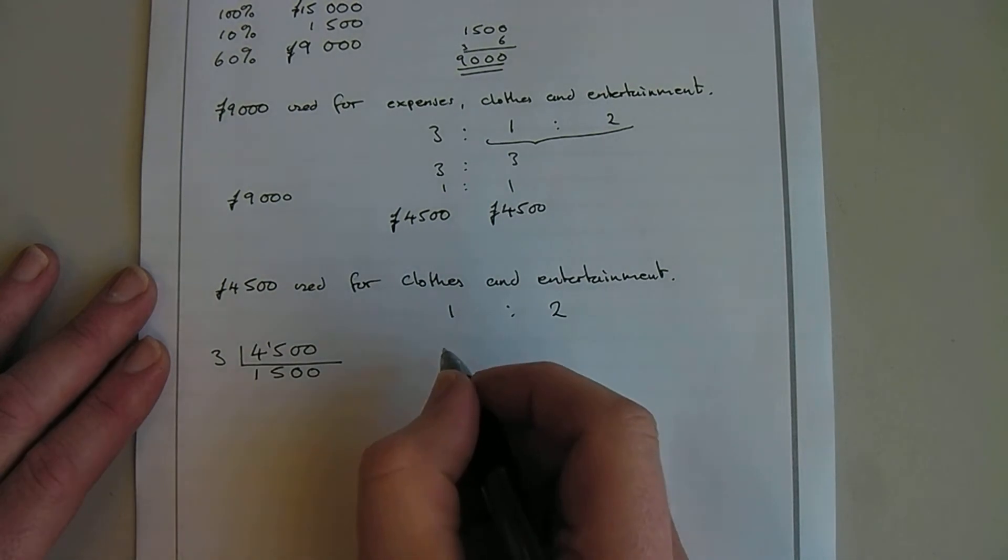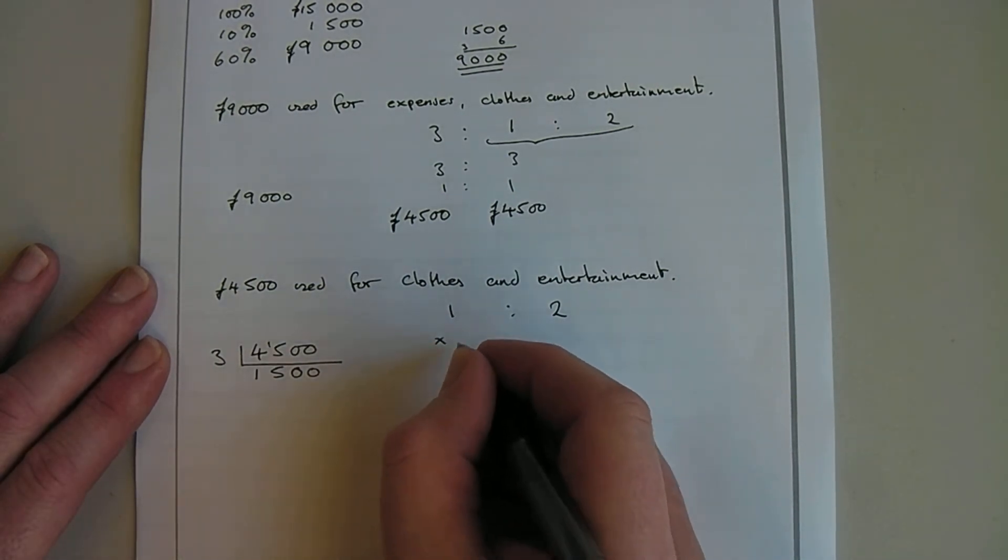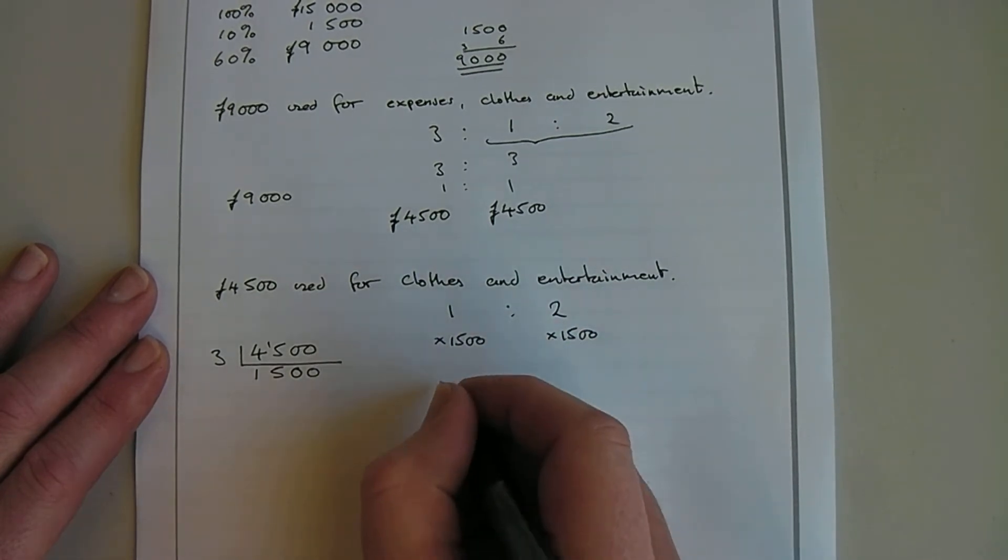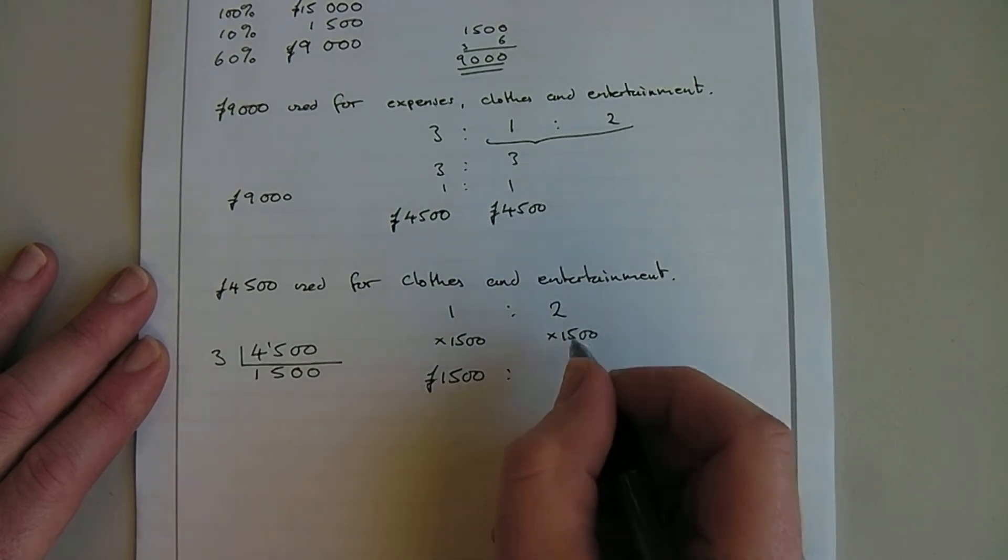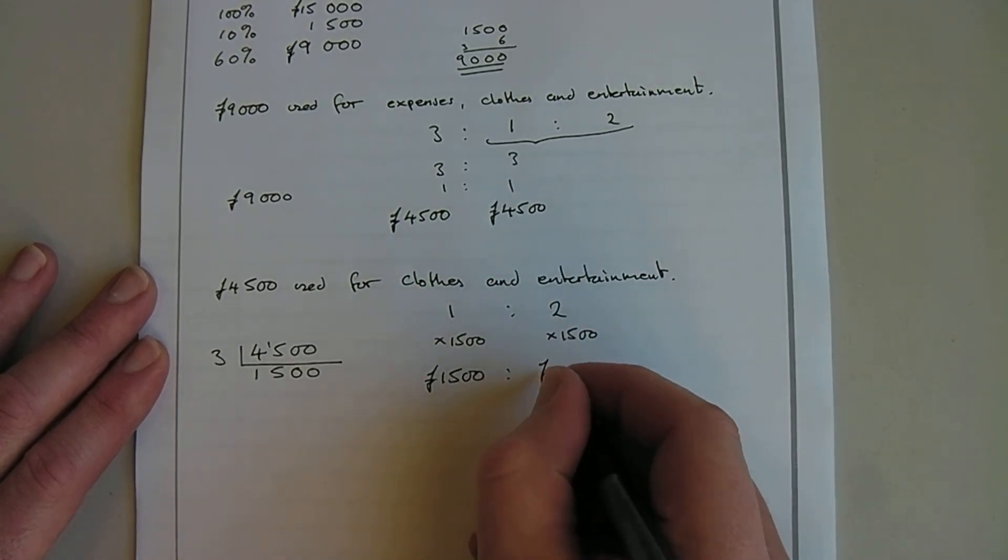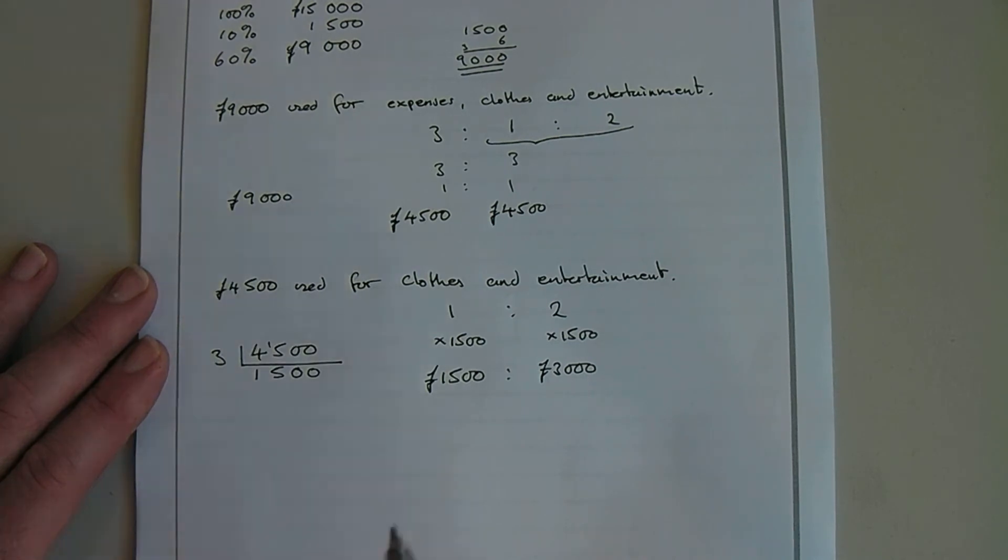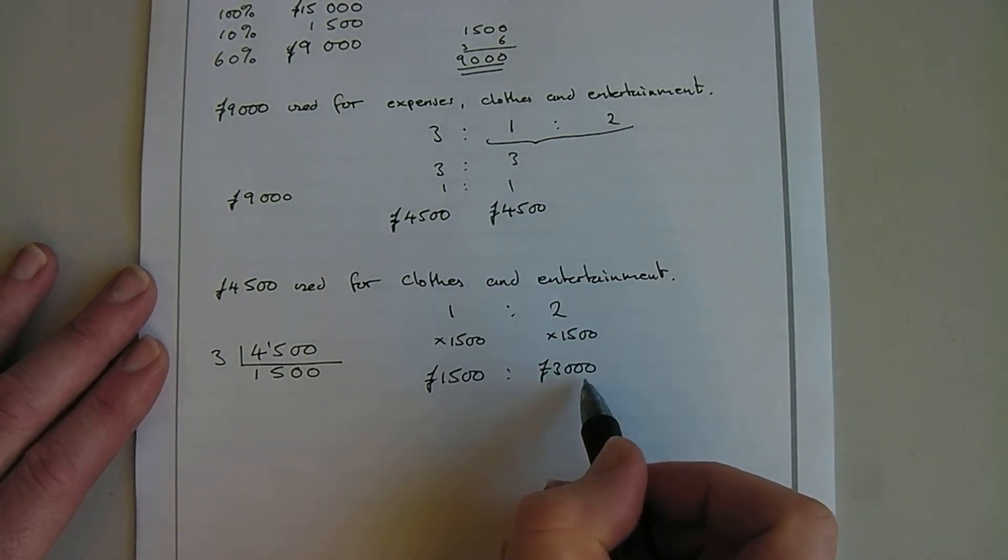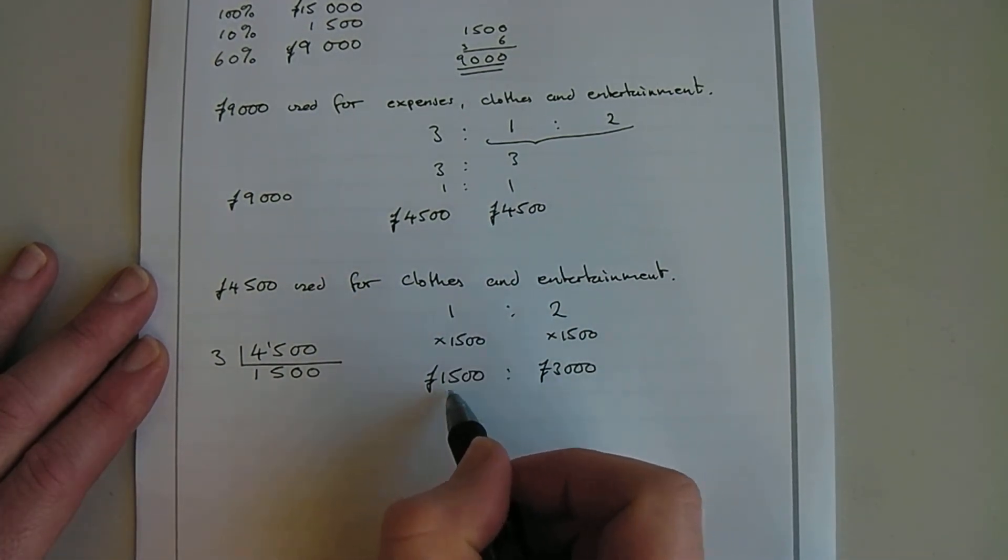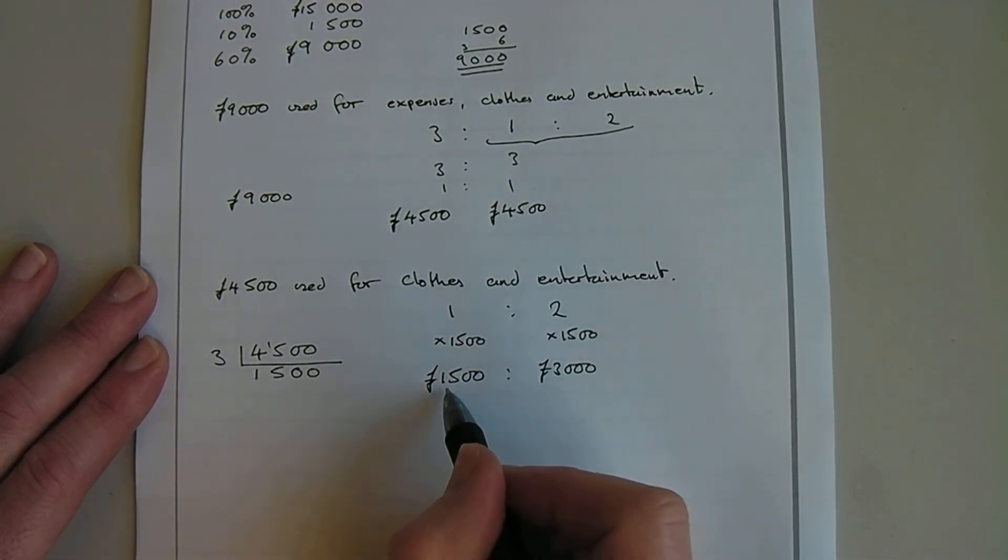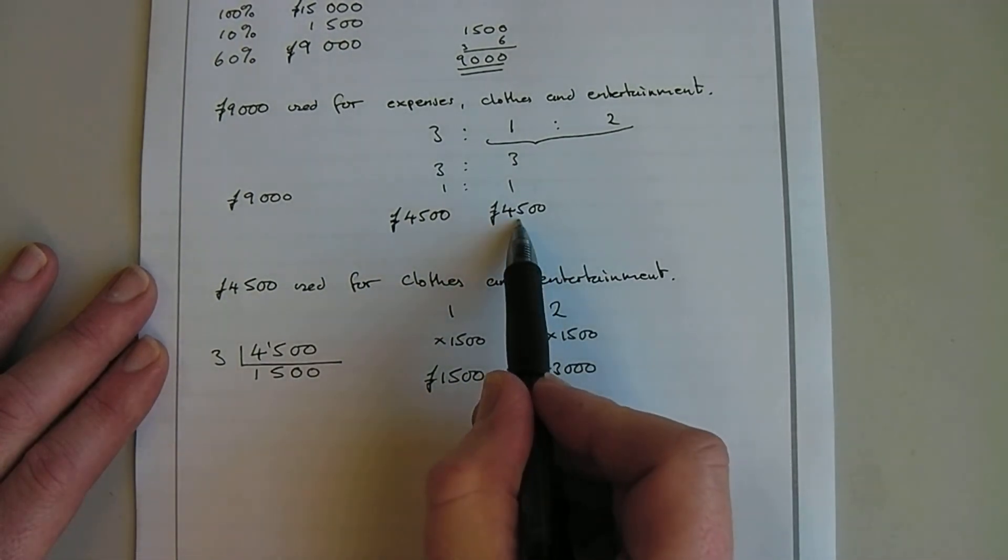So that means I can now times that by £1,500 and times that by £1,500. So that makes £1,500. And two lots of £1,500 is £3,000. And we can just visually check that. Two parts is £3,000. One part is £1,500. So twice as much as entertainment as she does on clothes. And together they added up to £4,500, which we know that because that's what we figured it out to be.